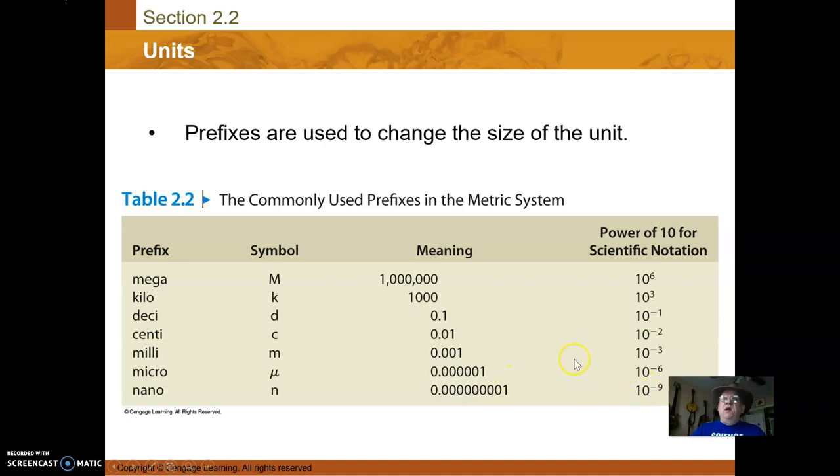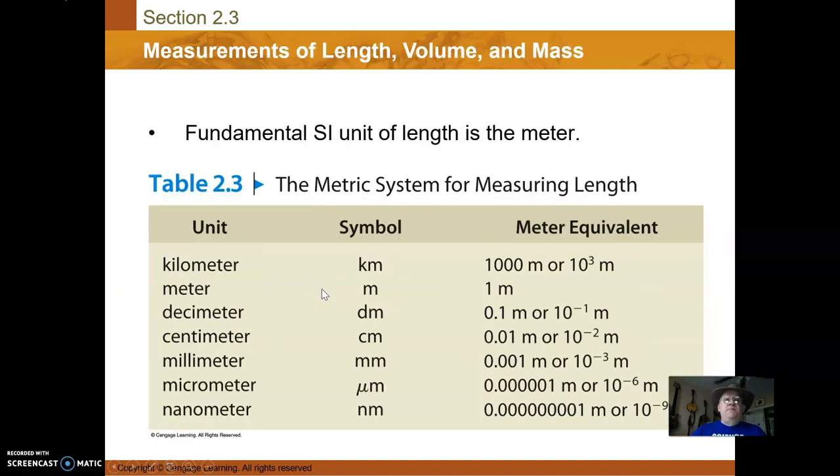A kilometer is a thousand meters. A decimeter is a tenth of a meter, 10 to the negative 1. This goes beyond chemistry - it's for all measurement systems, whatever discipline you're in. Could be length of fabric. If you're gonna make a thousand t-shirts, how much fabric do you need? It'll be measured in these units.